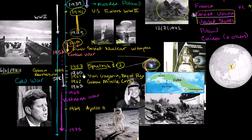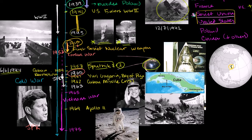At the same time, in 1960, you have John F. Kennedy being elected, kind of in the heart of the Cold War. He was also the first Catholic president, which was notable in itself. He was elected in 1960 but became president in 1961. He had a very short presidency — he was assassinated in 1963 — but a lot happened in that short time.